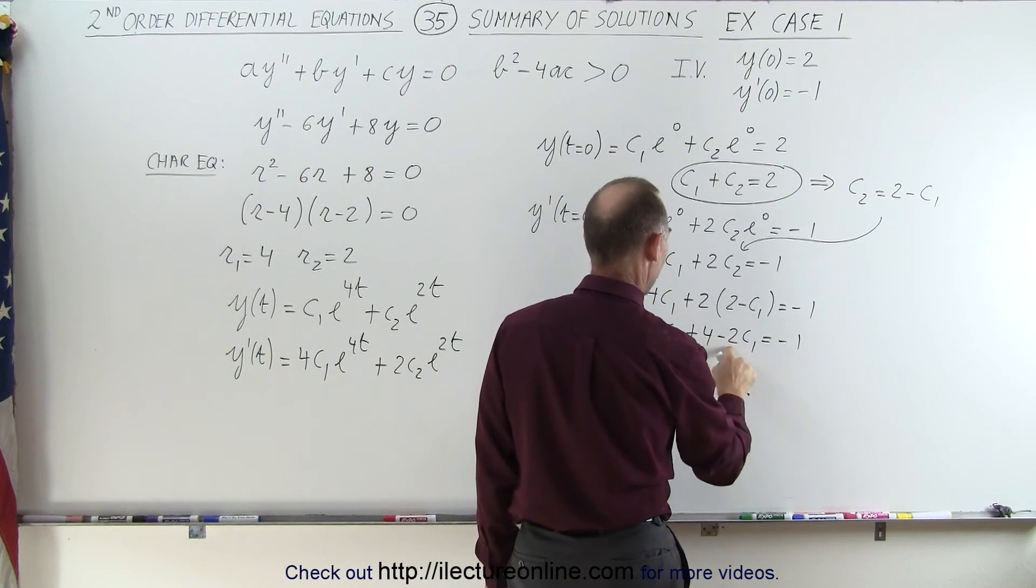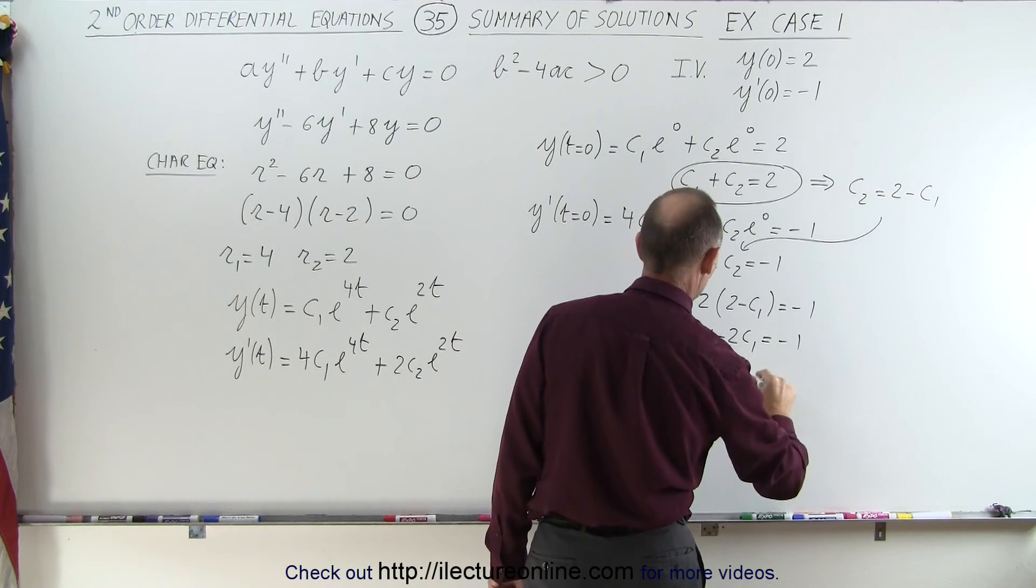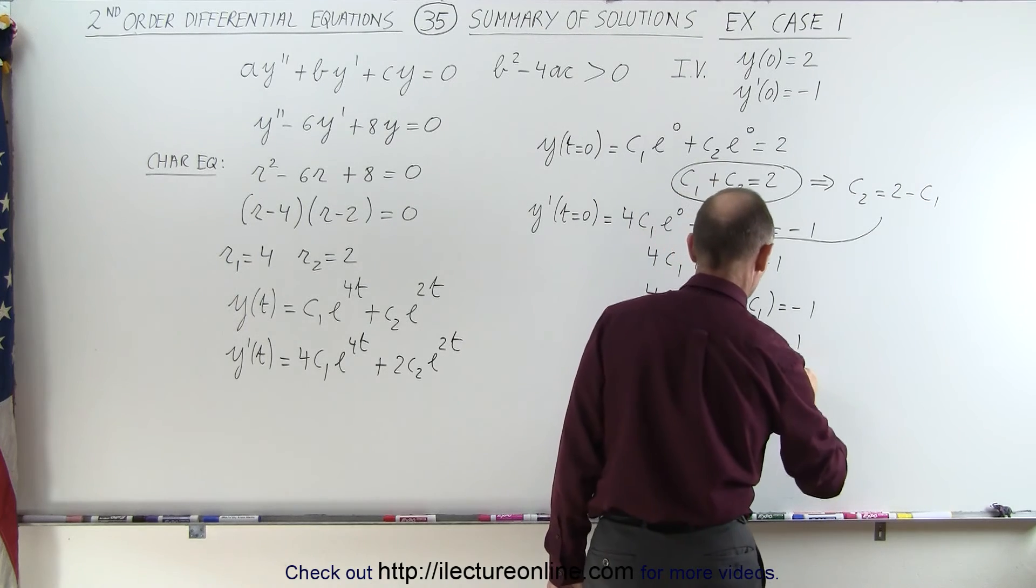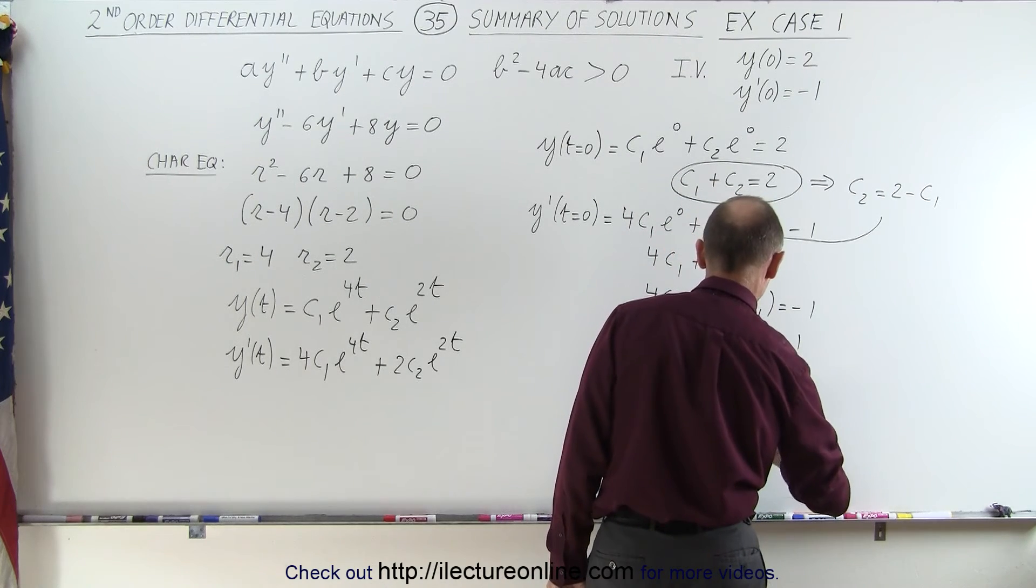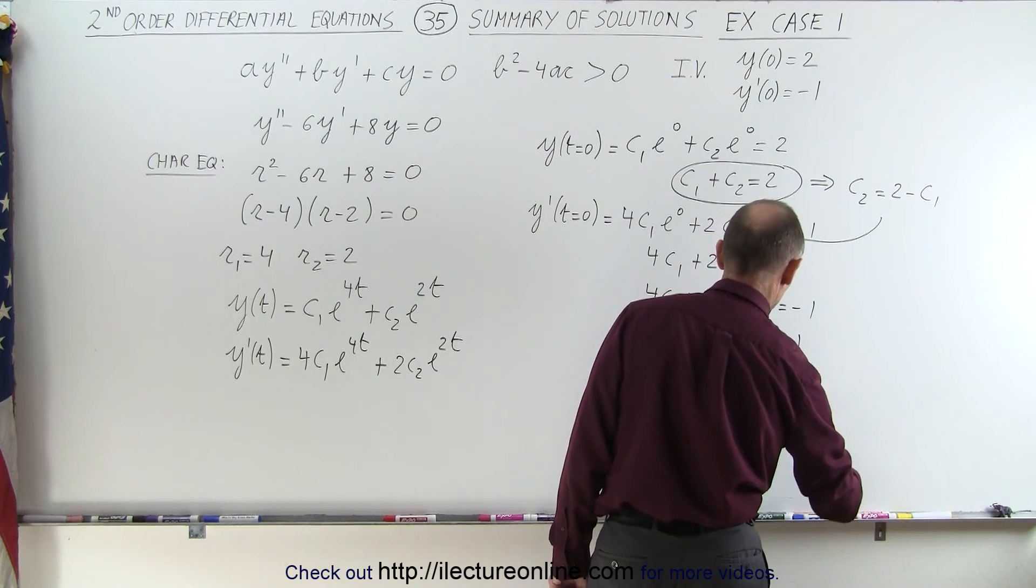And 4 minus 2, that would be 2c1, is equal to, that goes across, that becomes minus 5, or c1 is equal to minus 5 over 2.